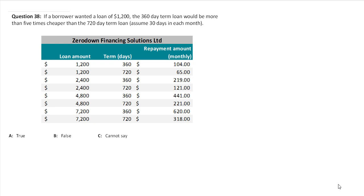We have Zero Down Financing Solutions Limited, and they offer loan amounts ranging from $1,200 to $7,200. These loans come with different terms and repayment amounts per month. For example, if you picked a $1,200 loan and chose to repay over 360 days, it would come down to $104 per month.